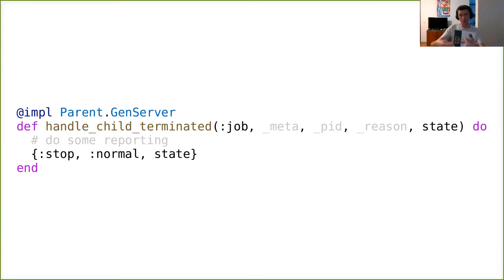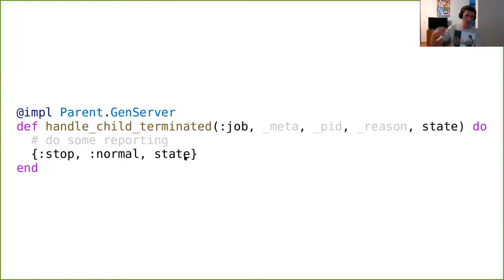I use meta occasionally when I want to restart a child — I store the input arguments in meta, and when this callback is invoked I have those arguments again and can start a new instance. The third argument is process ID, then exit reason, then the GenServer state. Here I can do some reporting and stop myself — again application-specific. I don't have to do bookkeeping since parent already removed the child from its internal records when this callback is invoked.